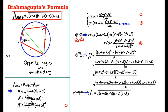Quadrilateral A, B, C, D has to be a cyclic quadrilateral, for reasons that you'll see later on. The area of the quadrilateral is equal to the sum of the areas of triangles ABC and ADC.